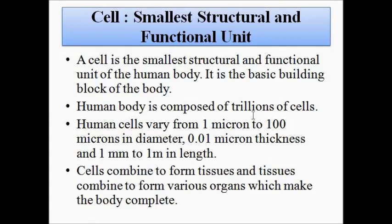The human body is composed of many cells, almost trillions in number. They vary in size from one micrometer to two hundred micrometers in diameter, 0.1 micron in thickness, and one millimeter to one meter in length. There is a tremendous difference in thickness, diameter, and length among the various cells associated with different body parts.